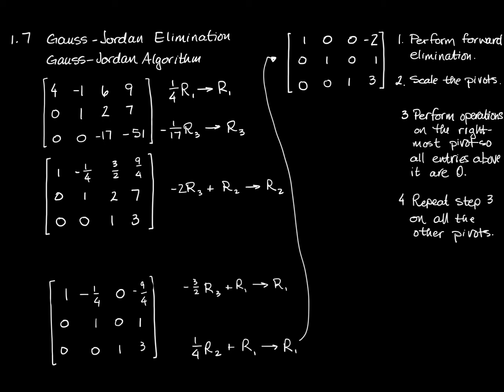The textbook has a step five that says stop when the entries above all pivots are zeros — but that's redundant, since step three and step four already accomplish that. We've done everything asked in four steps, so I'm not going to write step five. This matrix is now in reduced echelon form, and that is the result of performing Gauss-Jordan elimination: start with forward elimination, then instead of back substitution, scale the pivots and zero out everything above each pivot.